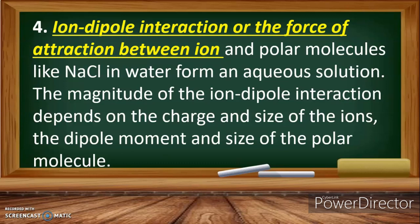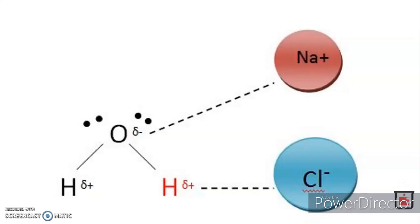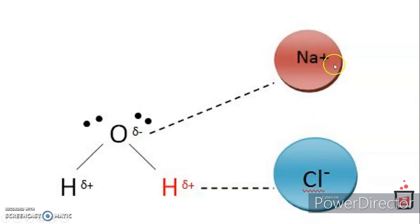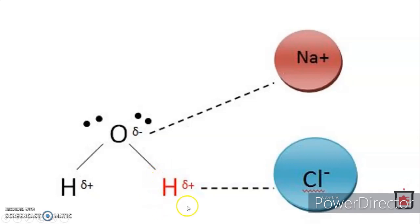Ion-dipole interaction is the force of attraction between ions and polar molecules — for example, sodium chloride dissolved in water forms an aqueous solution. The magnitude of the ion-dipole interaction depends on the charge and size of the ions, and on the dipole moment and size of the polar molecule. As NaCl dissociates in water, it forms sodium ions (Na⁺) and chloride ions (Cl⁻). The sodium cation is attracted to the partial negative charge of oxygen, while the chloride anion is attracted to the partial positive charge of hydrogen — together forming an ion-dipole interaction.